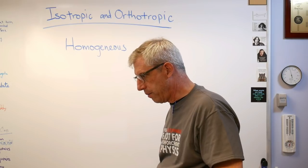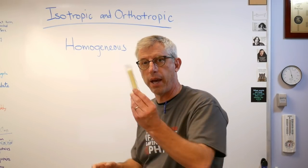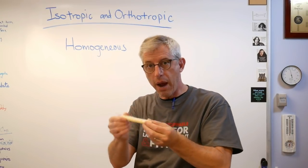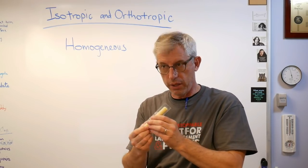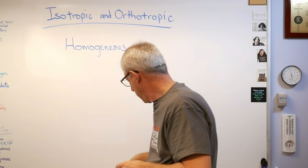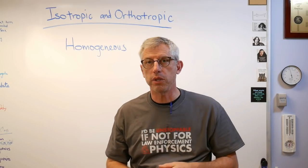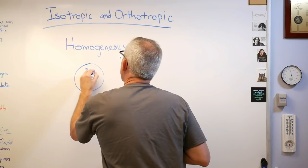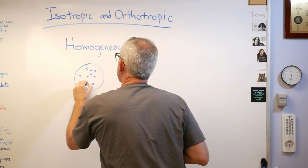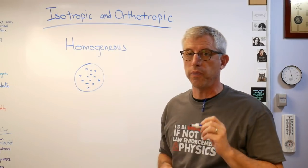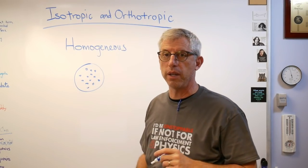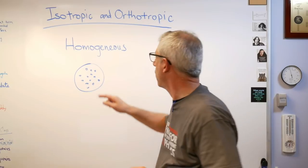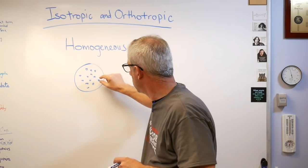Here's a cheese stick — this is going to be my lunch in a few minutes. It's the same everywhere; if I open this up and eat it, it's cheese all the way through. Something that's not homogeneous might be a chocolate chip cookie. You've got the dough, but it's also got all these chips in it — that's part of the wonderful fabulosity of a chocolate chip cookie. If you've never had one, I recommend them, but the material properties are not the same everywhere — the dough has one property and the chips have another.